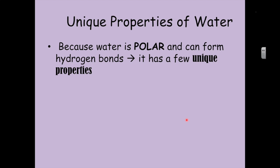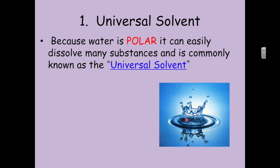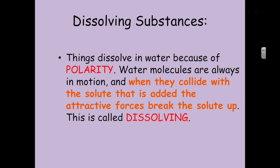So because water is so polar and it can make two hydrogen bonds for every molecule, it can form very unique properties. One, it's a universal solvent because water is polar and it can easily dissolve many substances and is commonly known as the universal solvent. Things dissolve in water because of polarity.